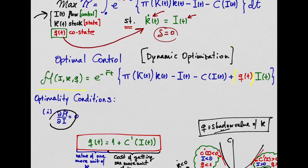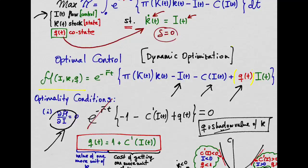First we need the optimality condition for the control variable. In our case, investment to be the derivative of the Hamiltonian with respect to investment has to be equal to zero. First we have investment here with the negative sign, and then we also have the cost function that depends on investment.